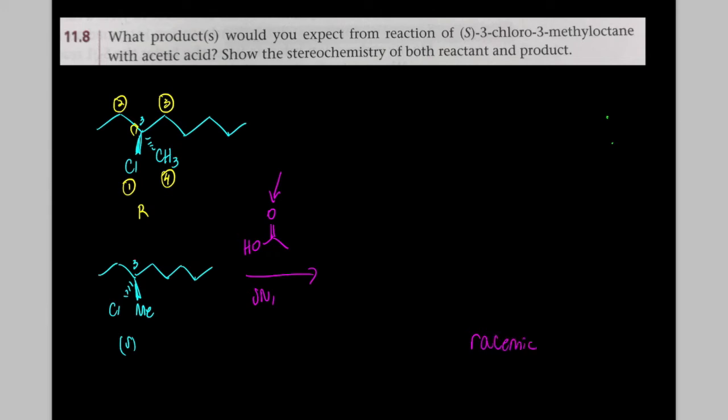So that means you get two products. One of them is going to have the acetate going back. And one of them is going to have the acetate coming forwards. And, of course, HCl is lost in this chemical reaction.